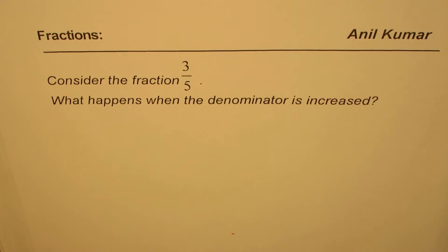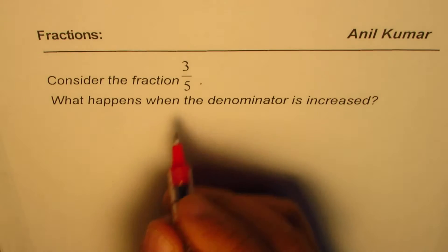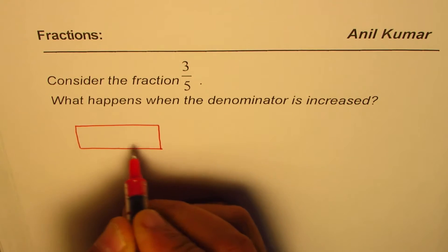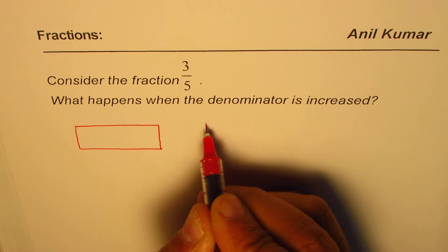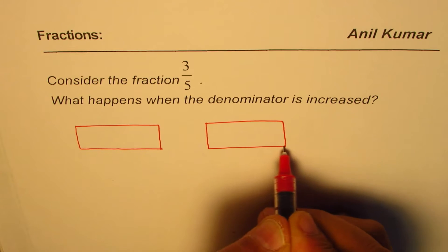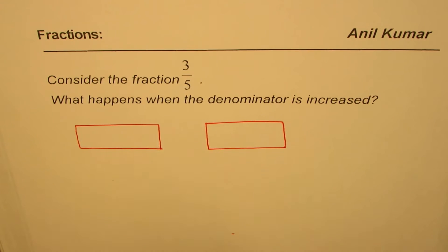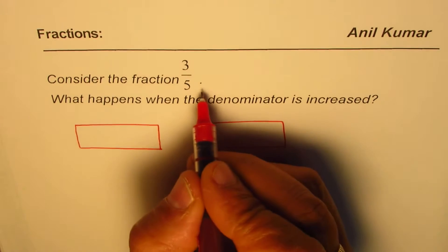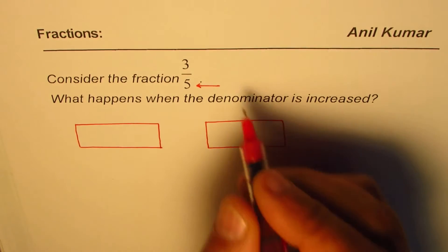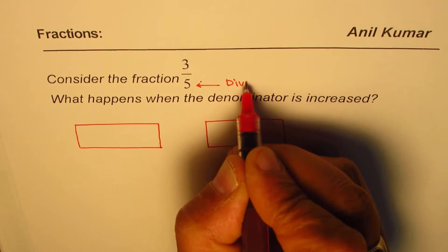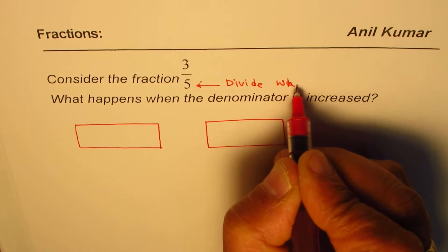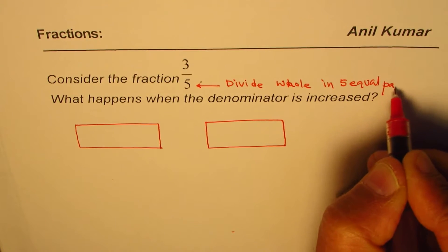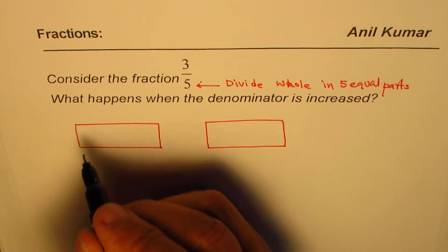Let's try to analyze. Let's say this box represents one whole. Let me make two of them — one here and another one here. Both are approximately the same size. When we have the fraction 3 over 5, the bottom part 5 means we need to divide the whole into 5 equal parts.